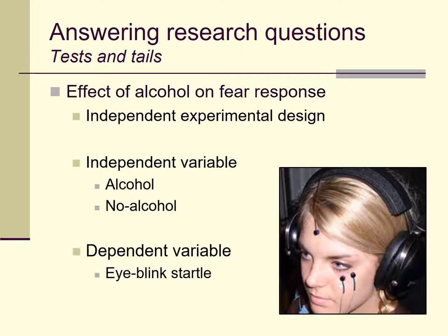Our dependent variable or outcome variable is a psychophysiological measure associated with the fear response: the eyeblink startle. How eyeblink startle is influenced by fear is a bit more complicated, but for purposes of this lecture, let's assume that how strong your blink is when given a sudden unexpected stimulus — like a loud sound in headphones — and how quickly it occurs has something to do with your ongoing emotional state, particularly your level of fear. So we have a categorical predictor variable and a continuous dependent variable.